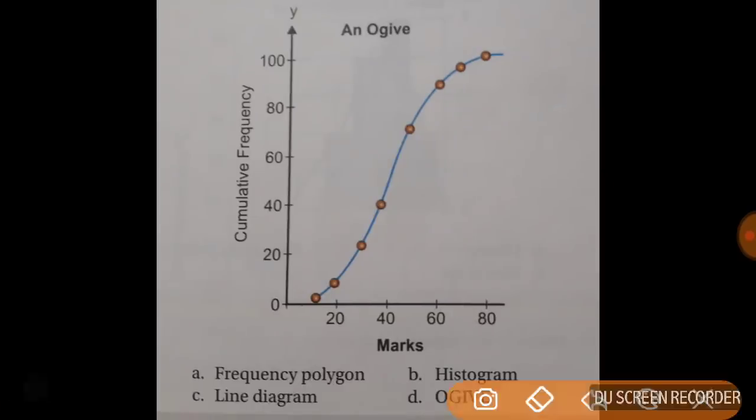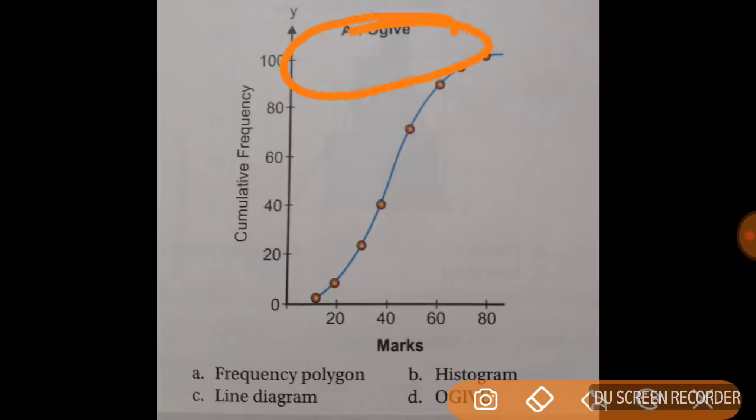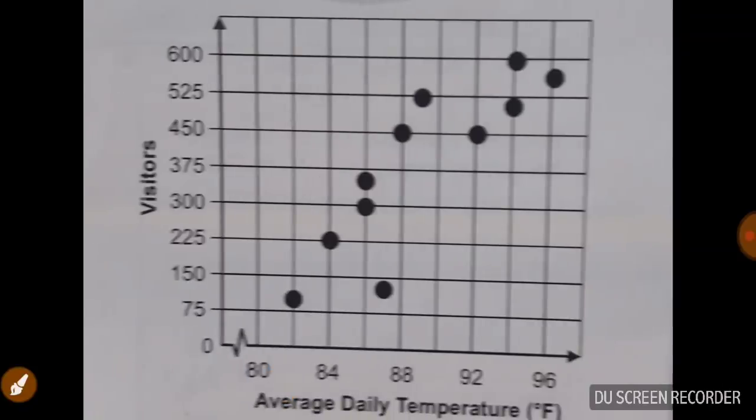Now what is this. Just remember it. This curve is called ogive. So it is cumulative frequency diagram or ogive which is given here. It is not a histogram. Sometimes you need to rule out the option to get the answer. So this is also one of the methods for getting answers in your exam.